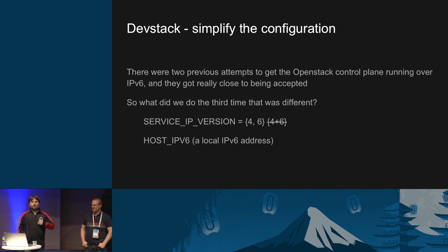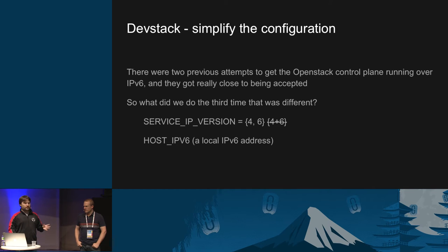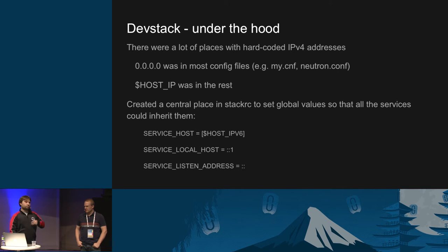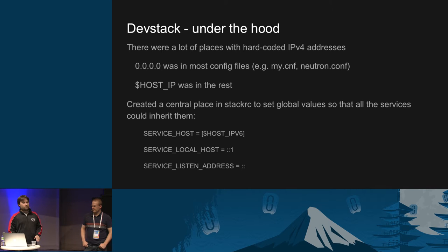There were a couple of patches floating around within the community for configuring the services and the data plane. Within those, there were two configuration knobs used to set both the IPv6 address that the host will use and an IPv6 configuration knob for what version of IPv6 will be used for all the services layer. What the work did was to standardize on the service host, service local host, and service listen address, referenced throughout the rest of DevStack so it could be set in one place and deployed everywhere.